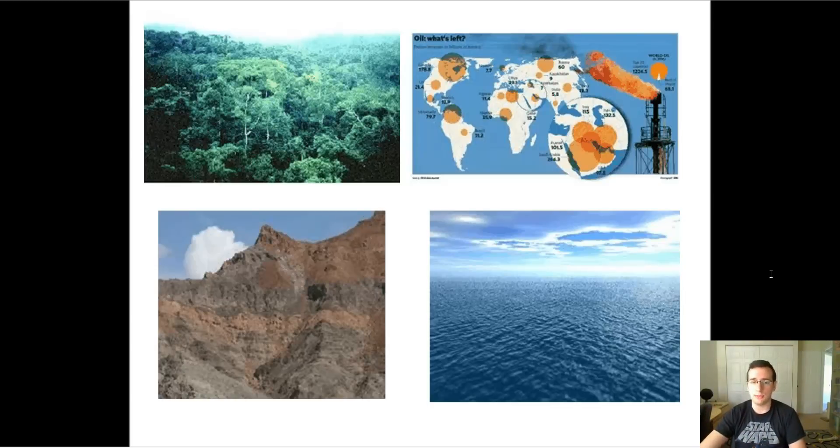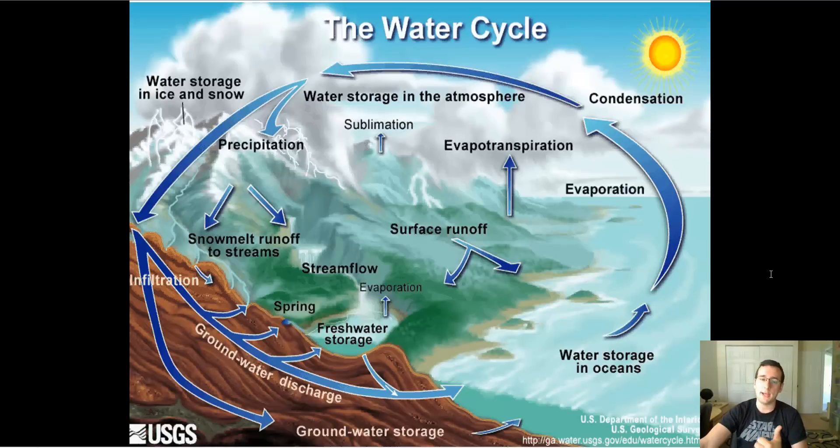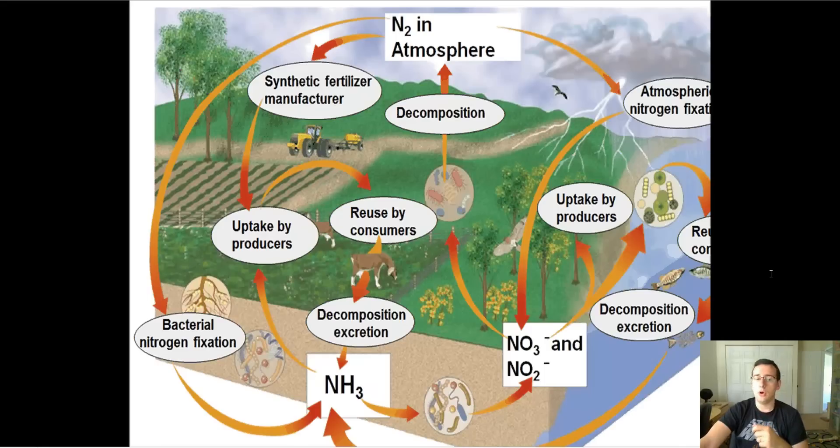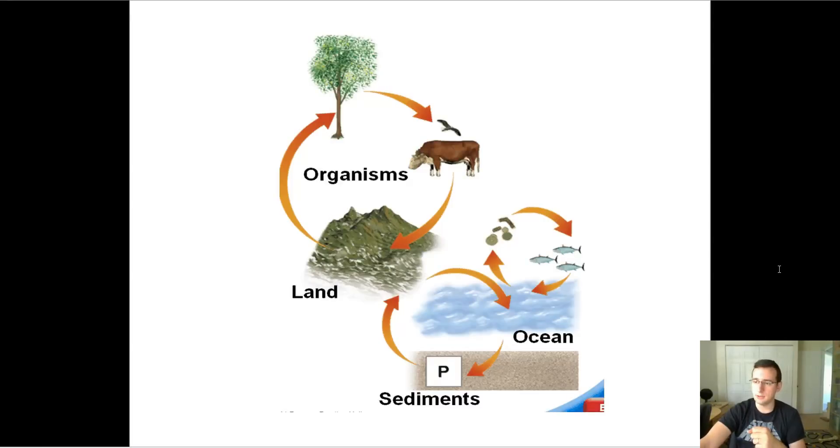Now, there are four main kinds of biochemical cycles we'll talk about. There's the water cycle. There is the carbon cycle. You also have the nitrogen cycle and the phosphorus cycle. And we'll talk about each one of them in the next few videos.